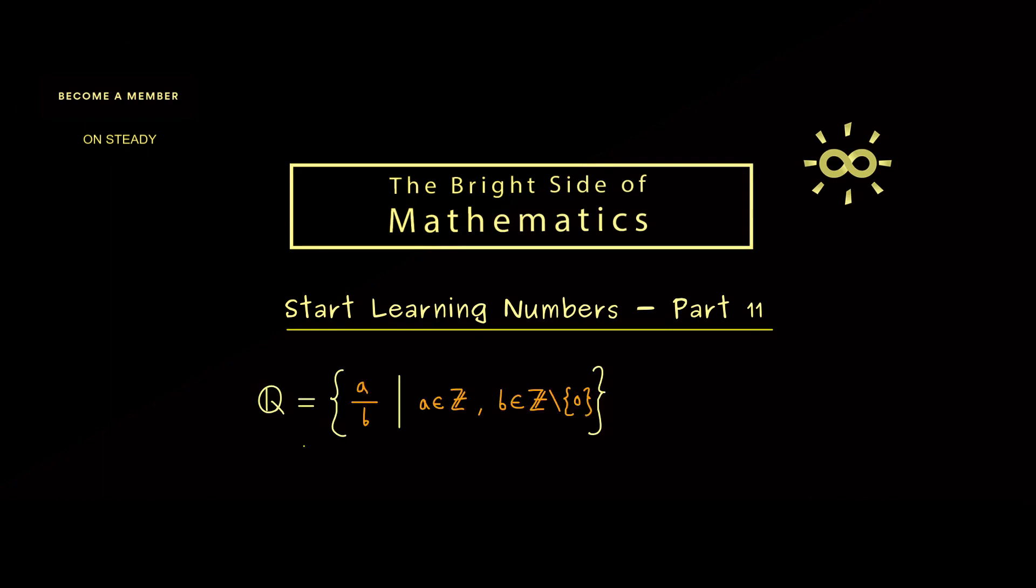Please recall the set Q is given by all possible fractions, and we would visualize the rational numbers on the number line. However, in order to do that, we actually need an ordering as we had it for the integers. For example, how do we know that we have one half here and one quarter to the left of it? And where exactly do we have one third then?